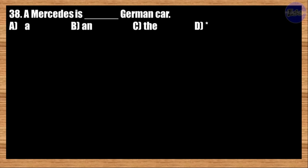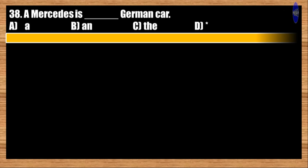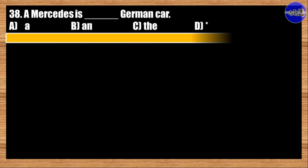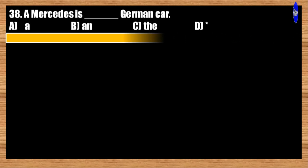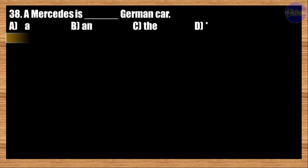Number thirty-eight: Mercedes is blank French car. A: a; B: an; C: the; D: blank. The correct answer is option A. A Mercedes is a German car.